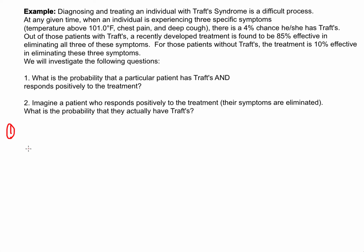A lot of information is being presented here, and what I strongly recommend doing in these situations is to draw a tree diagram to help us illustrate the various probabilities. We're talking about conditional probabilities, and if you look at number one, we want to know the probability that a particular patient has Traff's and they respond positively — these are dependent events. Here's a person coming into the doctor with these symptoms.